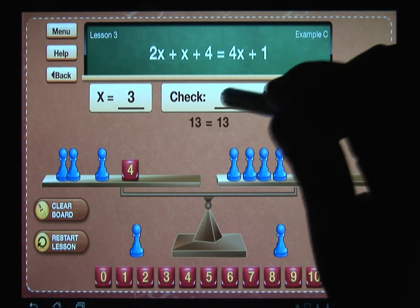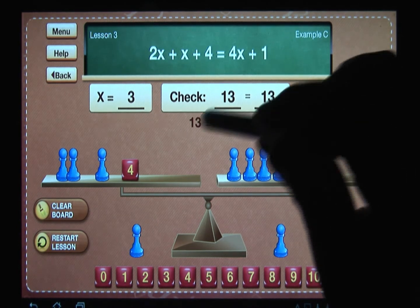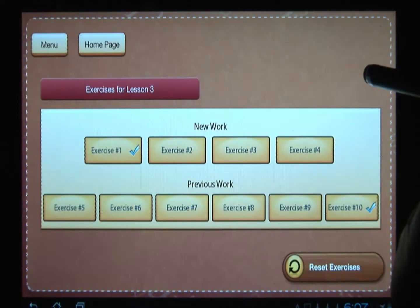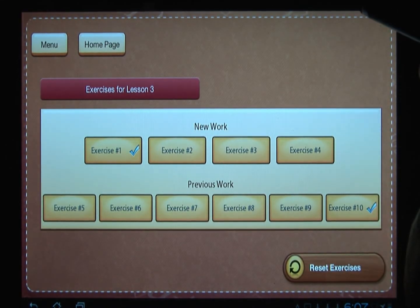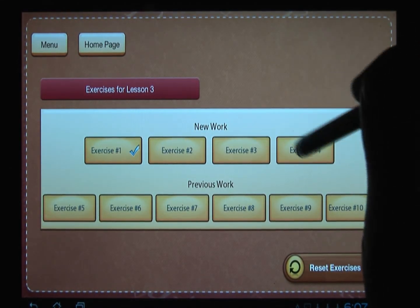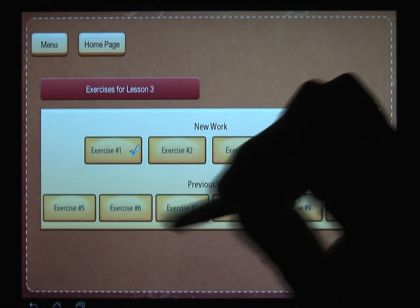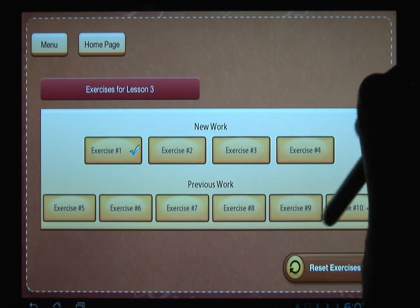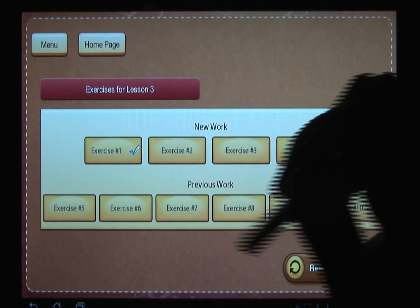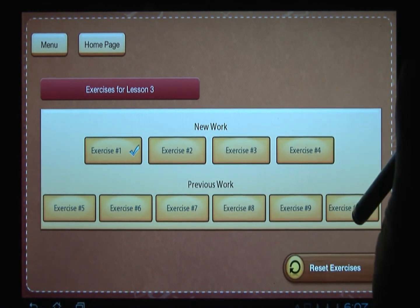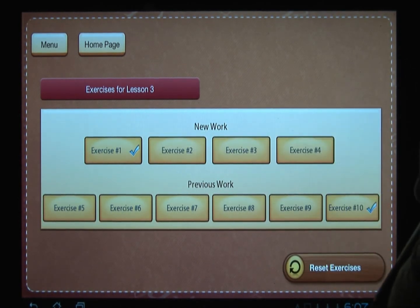Once you've done example C of each lesson, you then go on to the exercises for that lesson. And notice that you have four examples on the new work and you have six examples on the previous work, so the students are always reinforcing what they learned earlier. And the examples you've already completed will have a check, so the next time you come back to that particular lesson you will know what examples you still have to do.